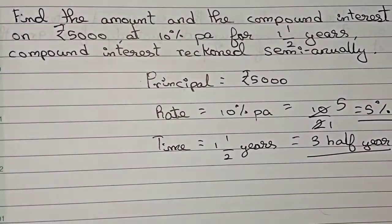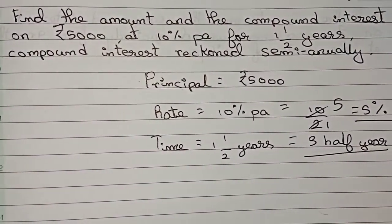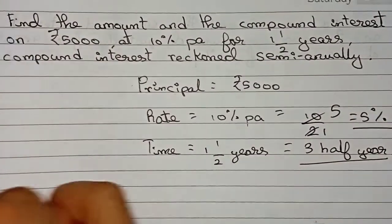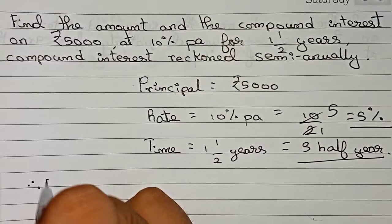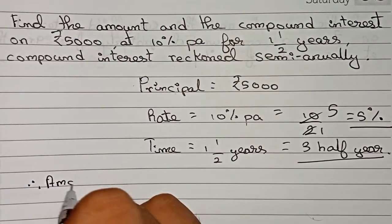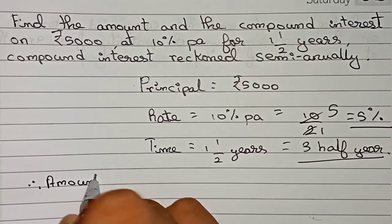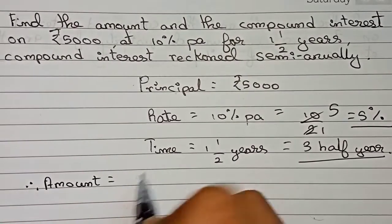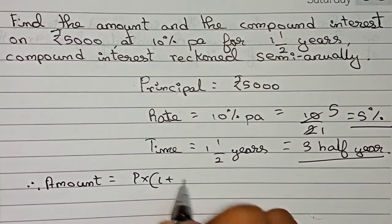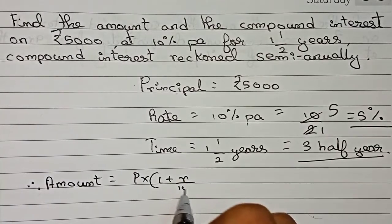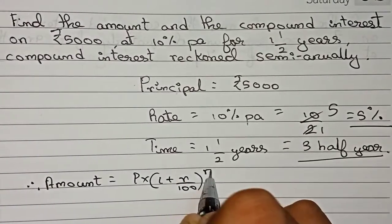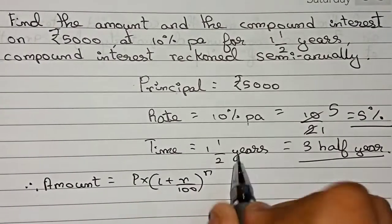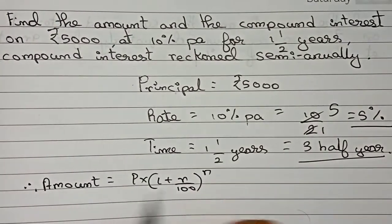Now we write the formula. Amount equals principal into (1 + r/100) to the power n, where n is the time in half-year periods.